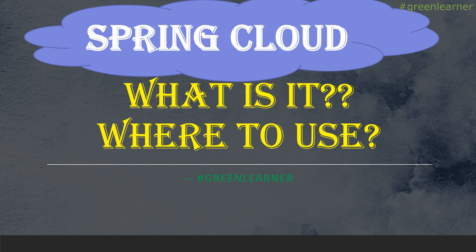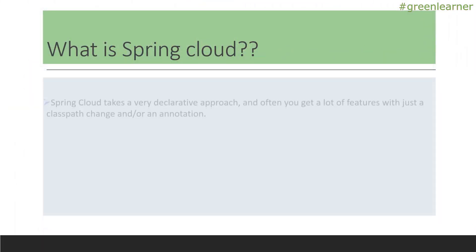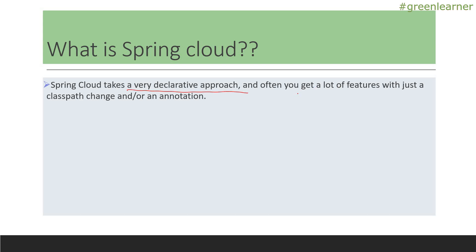Let's go ahead and see what Spring Cloud is and where we can use it. Spring Cloud takes a very declarative approach and often you get a lot of features with just a classpath change or annotation. When you are developing features, in a normal scenario we have to code a lot. But the Spring team has built this system so that you can just add dependencies and default features get added to your Spring application.